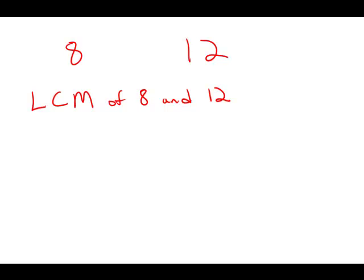You might be able to get this by guess and check, but I'll show you a procedure. First of all, we figure out what is called the greatest common factor — the largest factor that goes evenly into both 8 and 12 — and this happens to be 4. So, 8 equals 4 times 2, and 12 equals 4 times 3. I've written both these numbers in the form of greatest common factor times another factor.